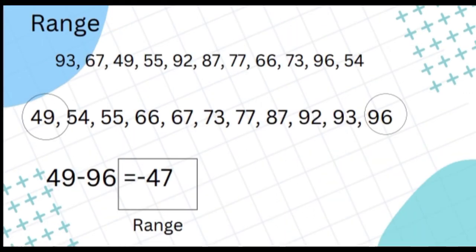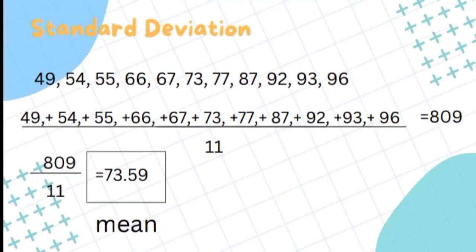Another example. The least value is 49 and the greatest is 96. So 96 minus 49 equals 47. Our range is 47. Here, our mean is 73.59, because we add all the given numbers and divide by 11.